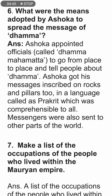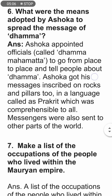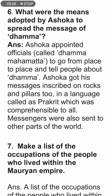What were the means adopted by Ashoka to spread the message of Dhamma? Ashoka appointed officials called Dhamma Mahamattas to go from place to place and tell people about Dhamma. He also got his message inscribed on rocks and pillars in Prakrit, which was comprehensible to all. Messengers were also sent to other lands such as Syria and Egypt.